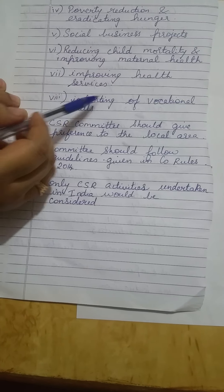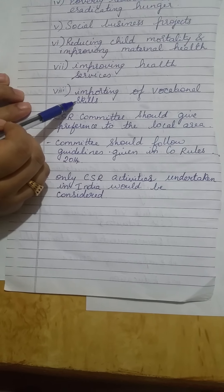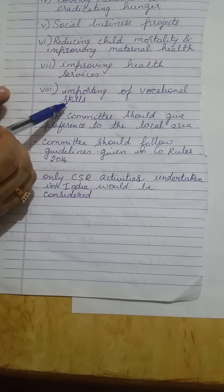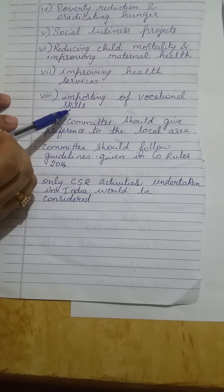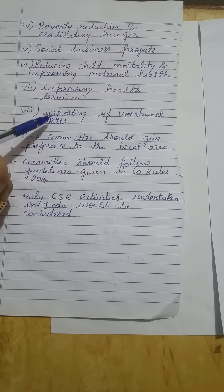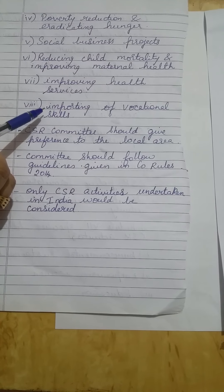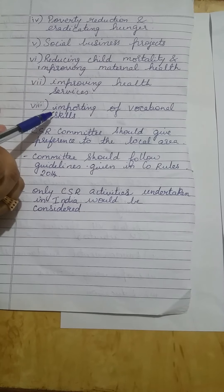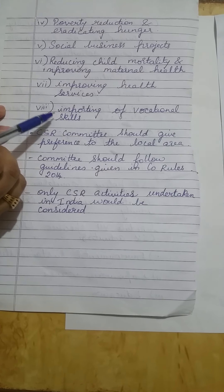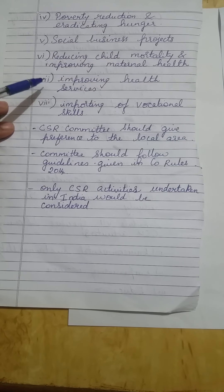Next we have imparting of vocational skills. Vocational skills basically means providing skills to people not through formal education but informally — providing skills in hand-making of handicrafts, hand looms. Teaching people how to do typewriting so that they become employable is also a part of imparting vocational skills. Basically all these activities become a part of CSR activities.